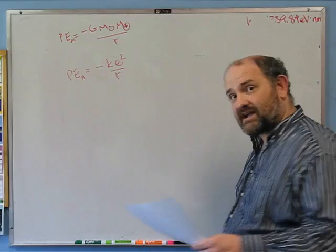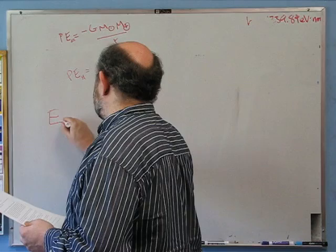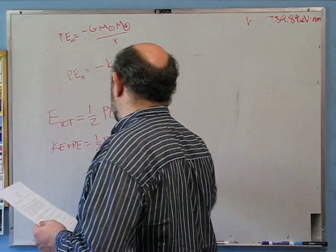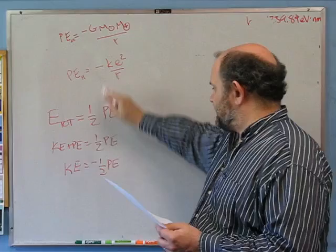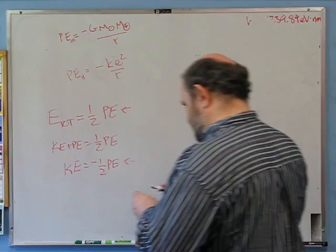A classical circular orbit has total energy equal to half its potential energy: E_tot equals (1/2) PE. And since E_tot equals KE plus PE, that must equal (1/2) PE. Or, subtracting PE from both sides, KE equals minus (1/2) PE. That's good because the potential energy is negative and the kinetic energy had better be positive.